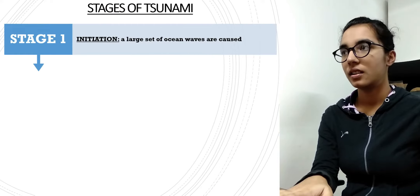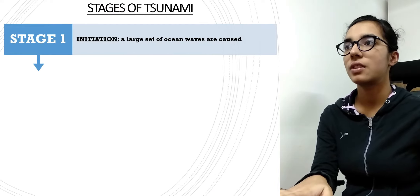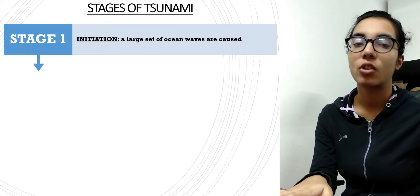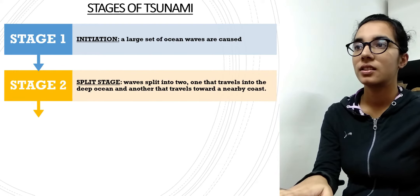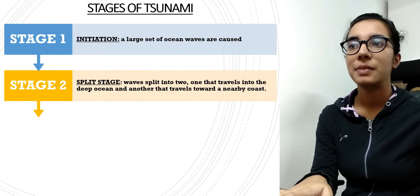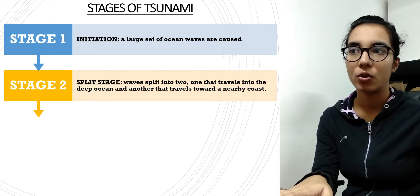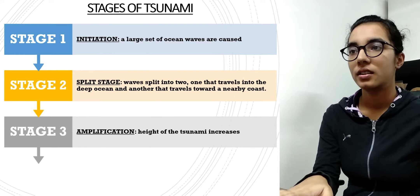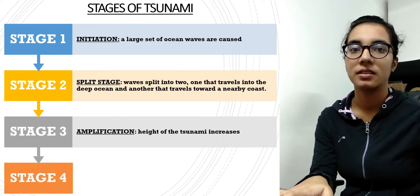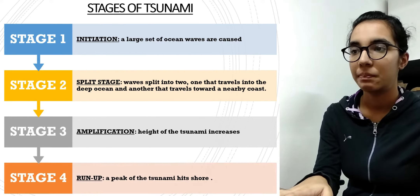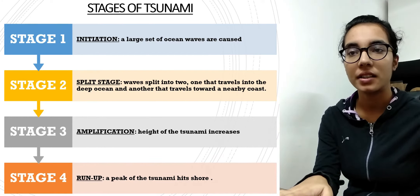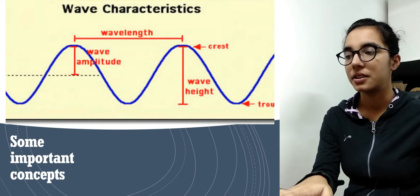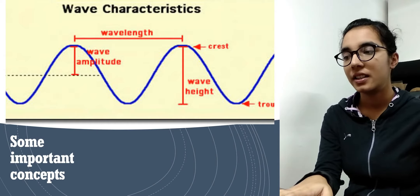Now let's talk about the stages of tsunami. The first stage is initiation — a large set of ocean waves is caused. The second stage is the split stage — waves split into two, one traveling into the deep ocean and the other toward the nearest coast. In the third stage the height of the tsunami increases. In the fourth stage, the peak of the tsunami hits the shore — that is the final stage.